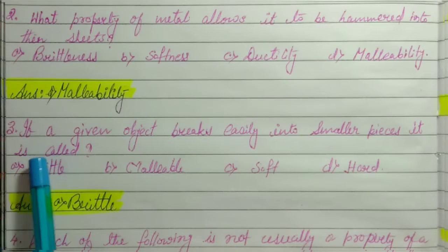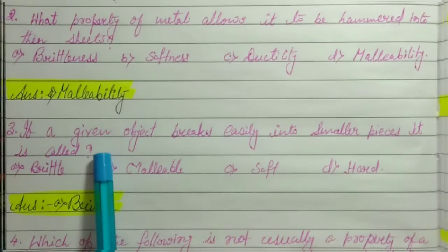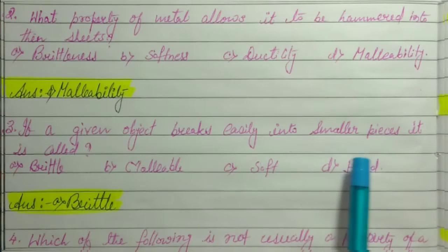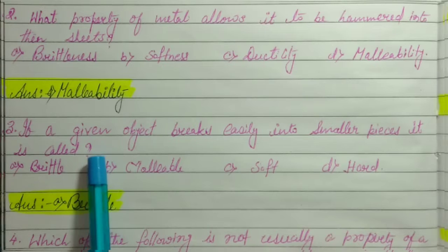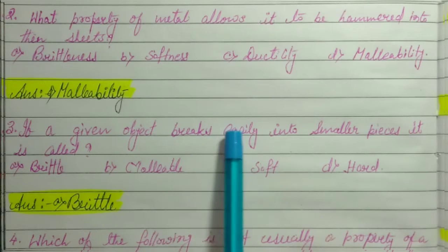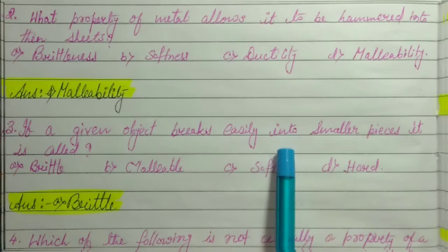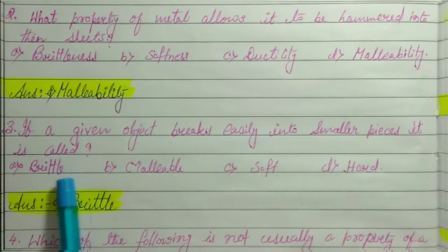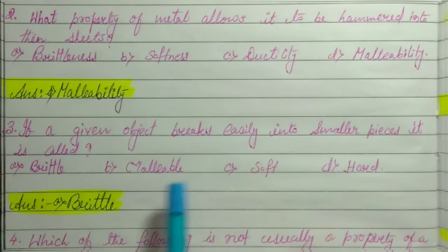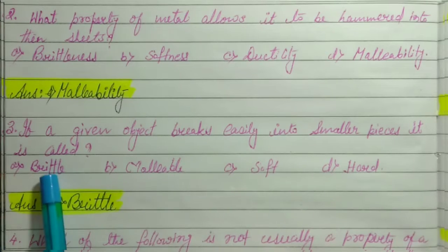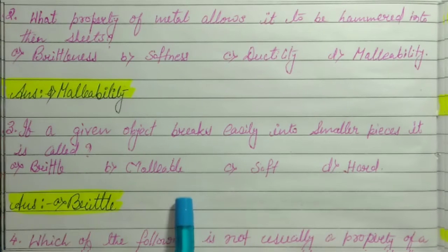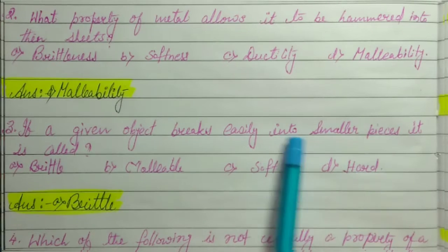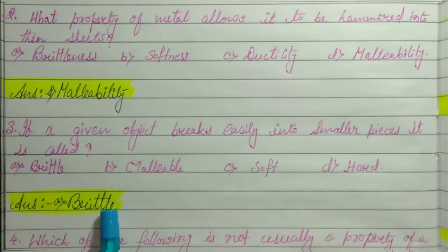Third question: If a given object breaks easily into smaller pieces, it is called — the correct answer is brittle.